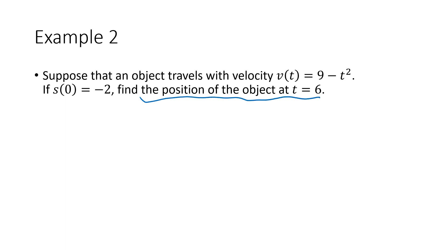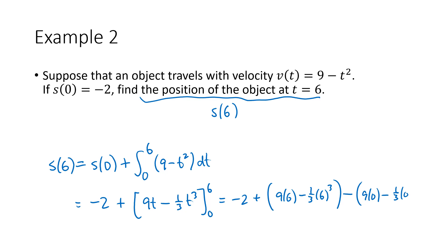So the position of the object at t equals 6, that's just saying in words, s(6). So from my formula, I know that s(6) is going to be s(0) plus the integral from 0 to 6 of my velocity function, which in this case is 9 minus t squared. s(0), they tell me is negative 2. And when I integrate, I get the antiderivative of 9 minus t squared, that's going to be 9t minus 1/3 t cubed, plug in 6, plug in 0, and subtract. So we're going to get negative 2 plus 9 times 6 minus 1/3 times 6 cubed, and that's going to be minus 9 times 0, minus 1/3 times 0 cubed. Plug all of that into our calculator, and that's going to work out to be negative 20.